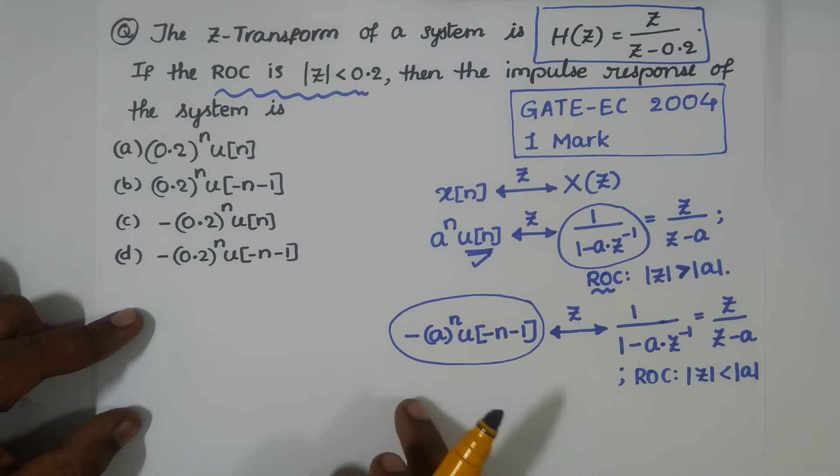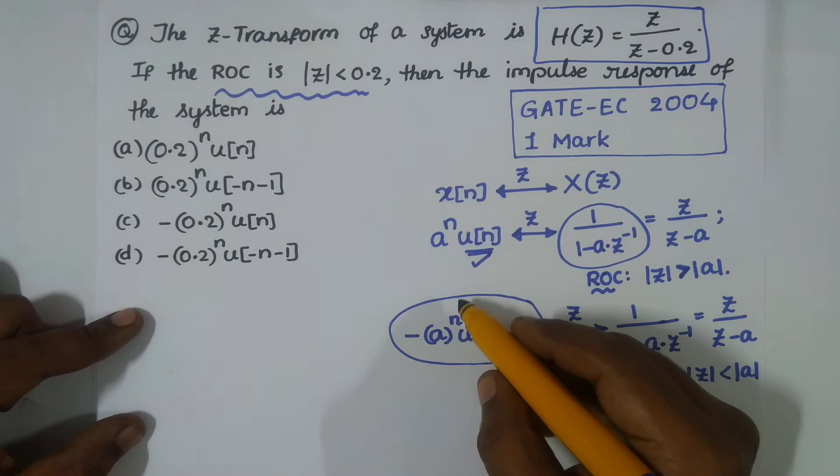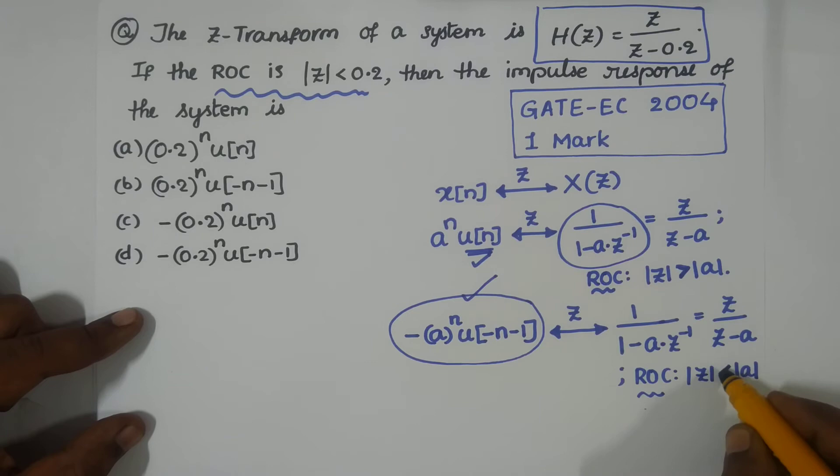Whenever we have left side sequences, this could be an anti-causal sequence. Therefore, the region of convergence is always interior of a circle whose radius is a, or this could be a pole.